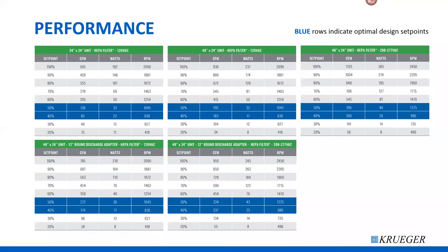The performance charts for these units are also available on the Kruger website. The 40% and 50% pulse width modulation set points are highlighted as optimal design set points. We recommend targeting these when you initially turn on the unit. Avoid cranking the set point too high — as the filter becomes loaded, pressure drop increases and motor RPM increases to compensate, so you need to leave enough headroom for the motor to ramp up.